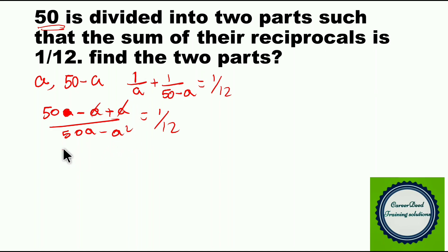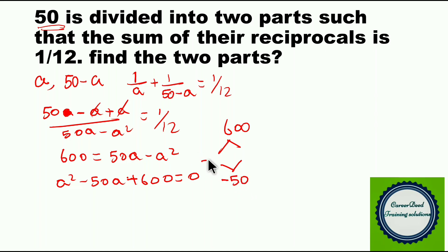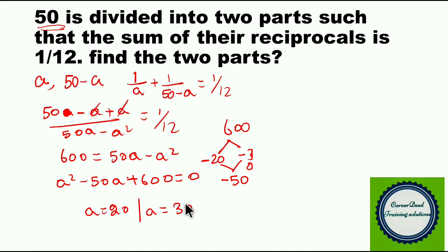Rearranging gives A squared minus 50A plus 600 equals 0. Factoring: you need two numbers that multiply to 600 and add to minus 50, which are minus 20 and minus 30. So A equals 20 or A equals 30. If the first part is 20, the second part is 30; if the first part is 30, the second part is 20. So the answer is 20 and 30.